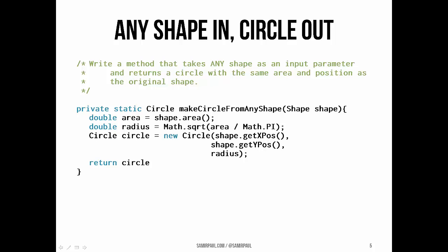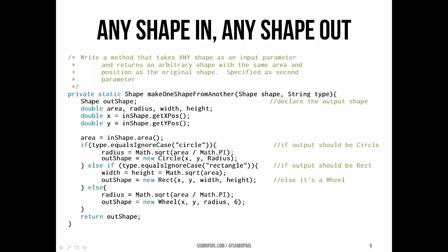Now let's modify that method so that it can take any shape as an input parameter — like a circle, a rectangle, or a wheel — and generate a circle with the same position and same area. This is straightforward largely because we can guarantee that any shape understands the area method. That's a great advantage of using the shape interface. The behavior looks substantially the same: instead of taking a rectangle specifically, we take a shape, get that shape's area, store it, back-calculate the radius, and return our new circle.